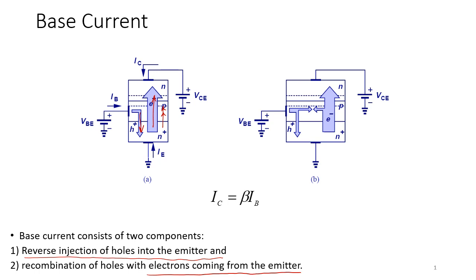Because the base is very thin, only a very small fraction — about one percent — of the electrons get recombined. Those holes must be provided by the base junction. So the current going into the transistor from the base is made of these two small components, making it much smaller than the collector current. Depending on the base thickness and doping levels, you get a parameter called beta, which is the ratio between the collector current and the base current.